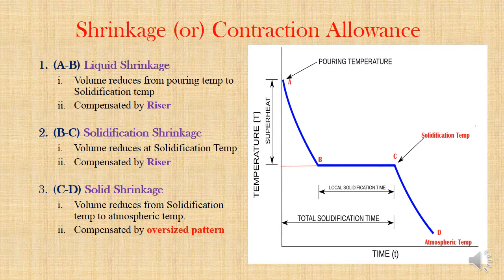A to B is liquid shrinkage and B to C is solidification shrinkage. During these two processes the metal is mostly in liquid form, so the riser — fixed above the mold — can feed molten metal to compensate. The riser compensates both liquid shrinkage and solidification shrinkage. But the riser cannot compensate from C to D because the metal is in solid state. This is called solid shrinkage, where temperature decreases from solidification temperature to room temperature. Solid shrinkage alone is compensated by oversized patterns.